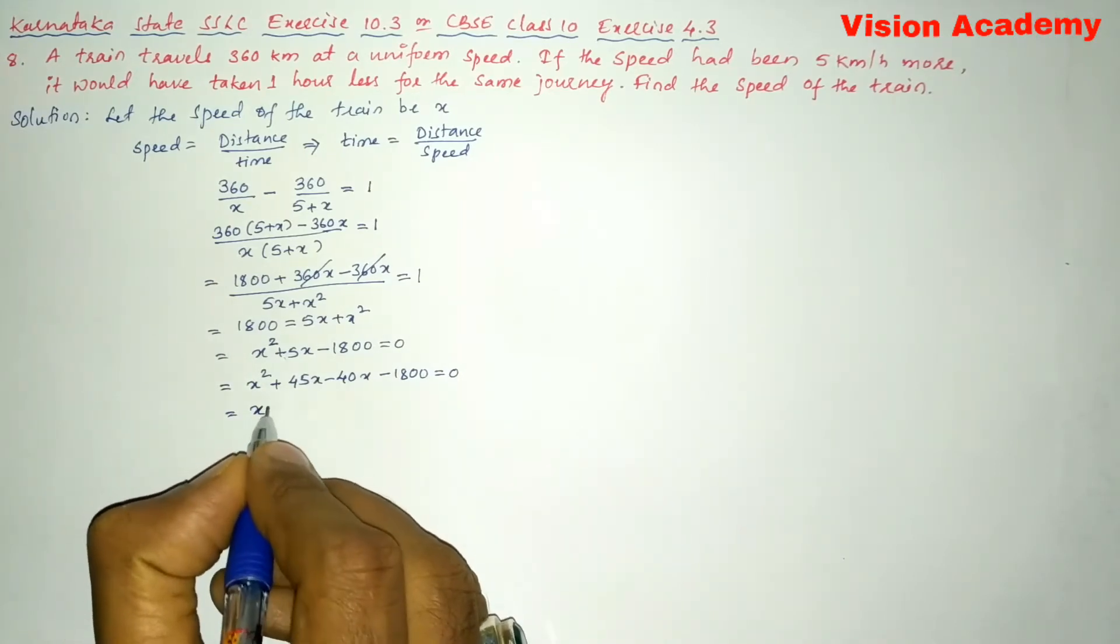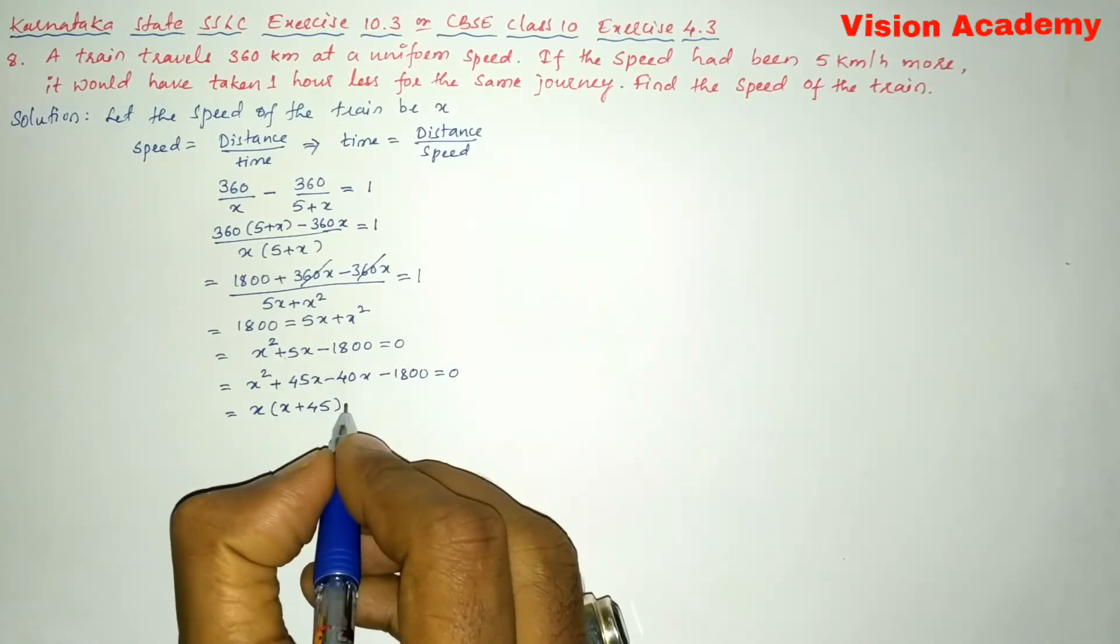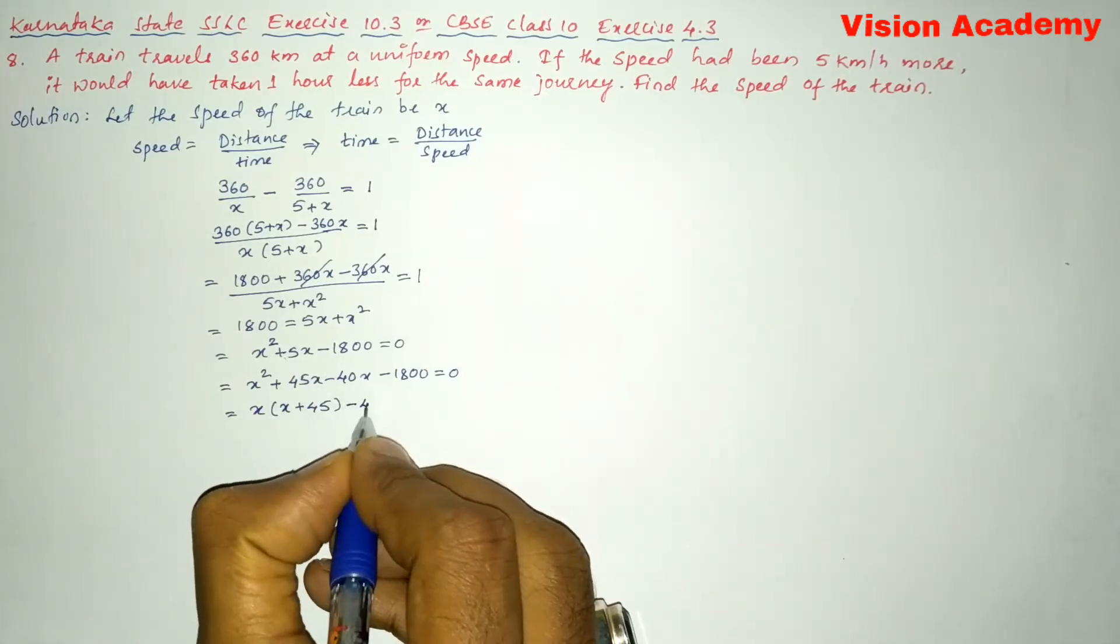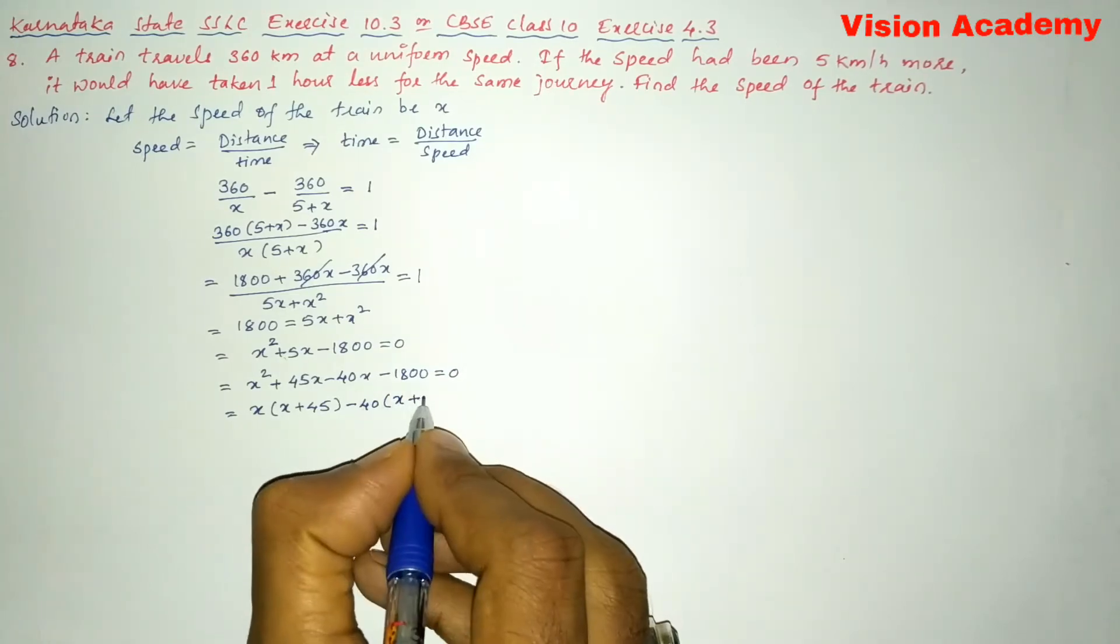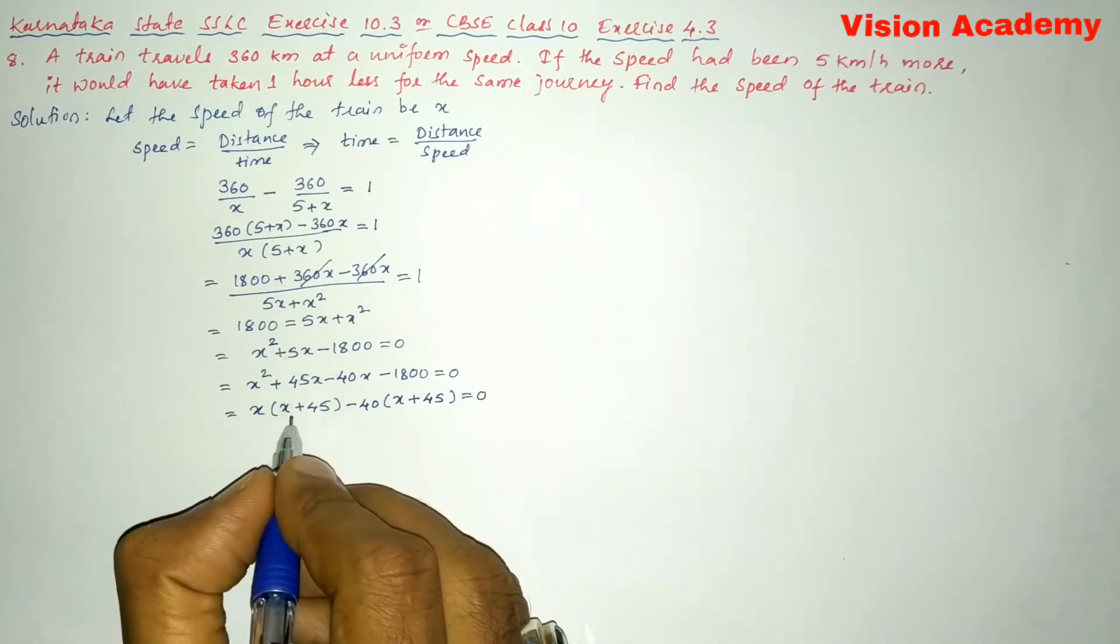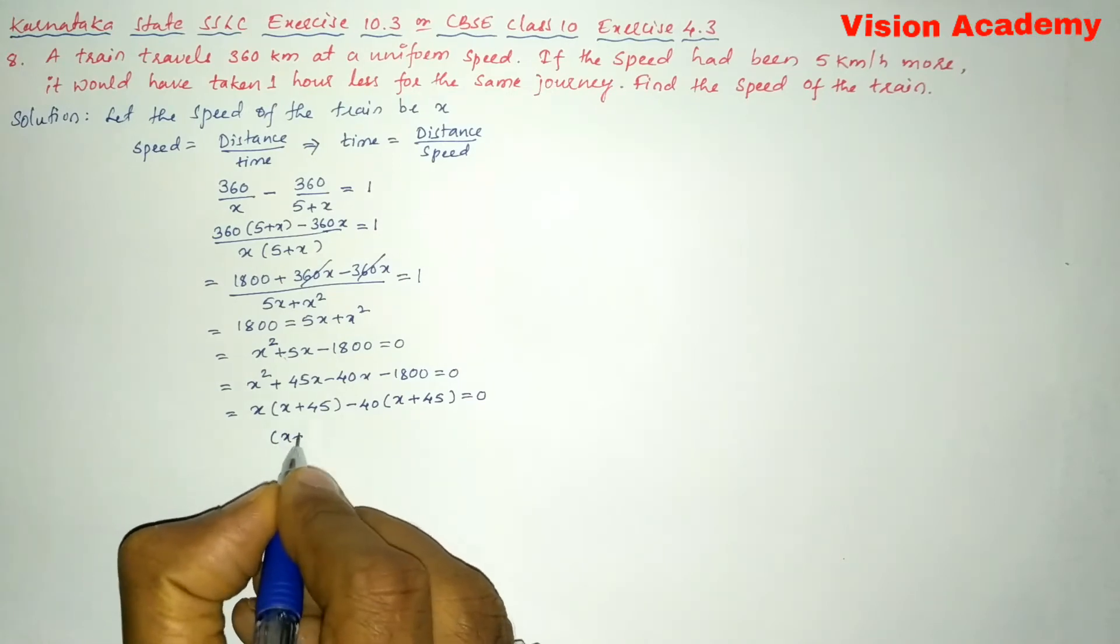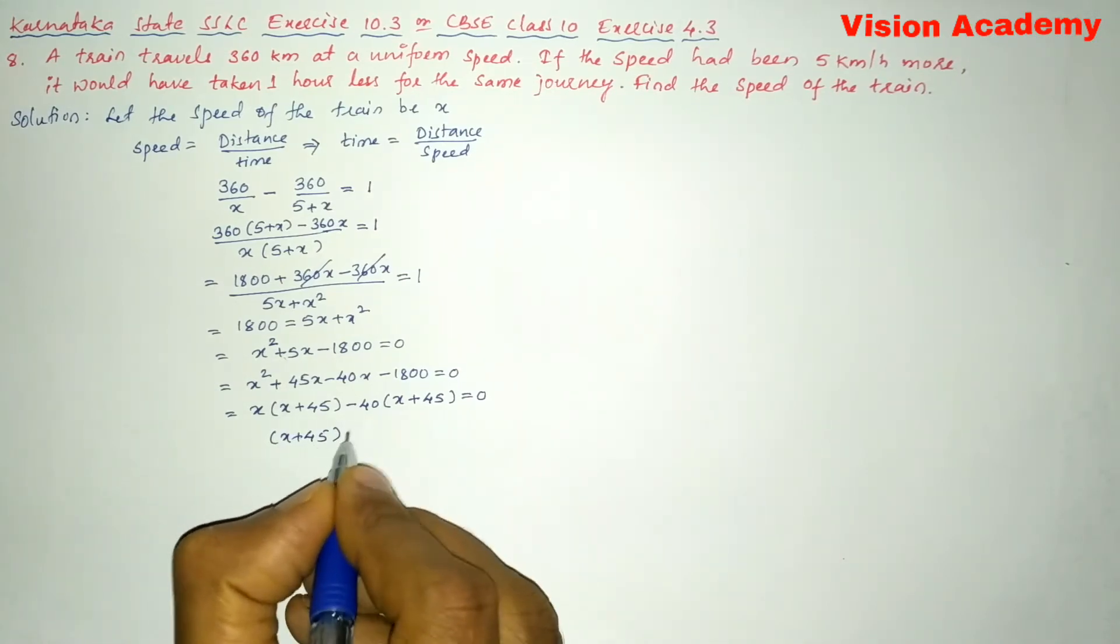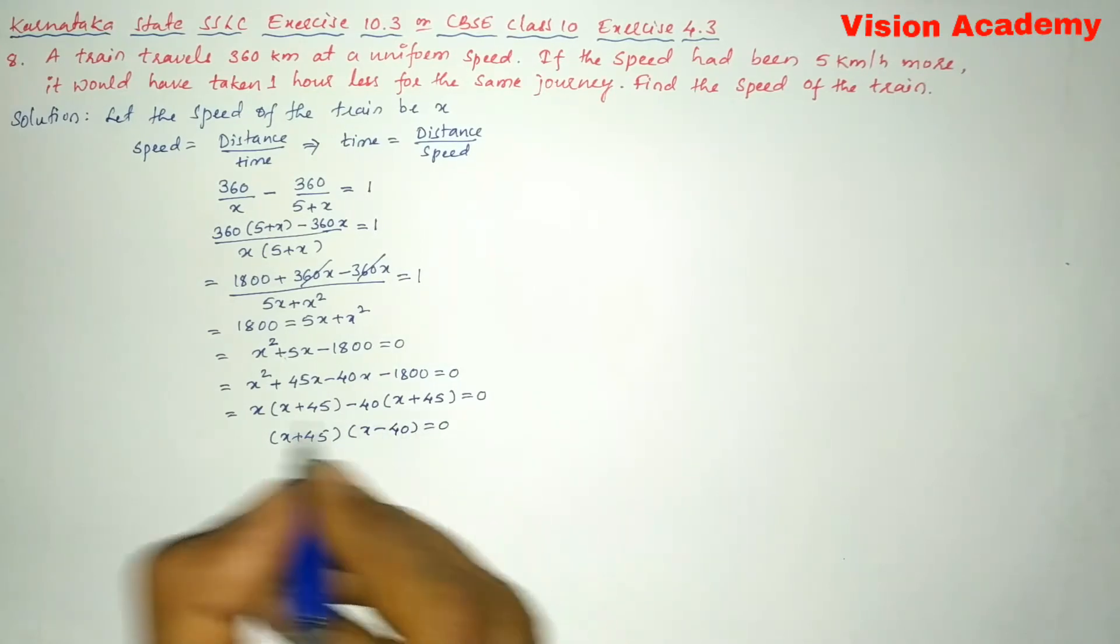Now let us consider only these two terms. So let us take out common. So x is common, x plus 45 inside of the bracket, and here minus 40 is the common and here x plus 45 is equal to 0. We can see here x plus 45 and x plus 45 is common. So let us write first x plus 45 into x minus 40 is equal to 0.